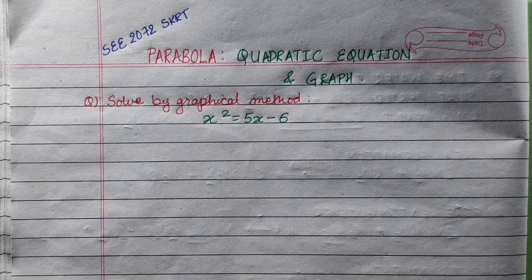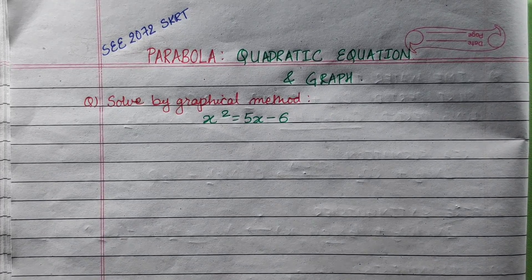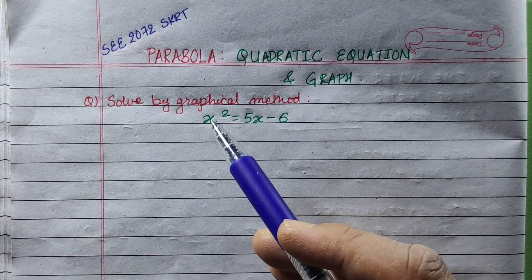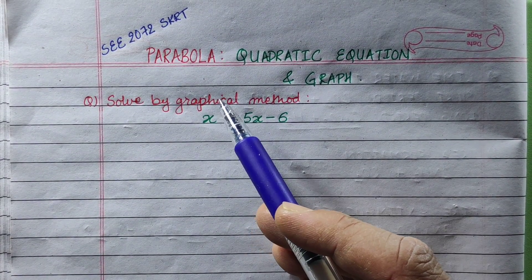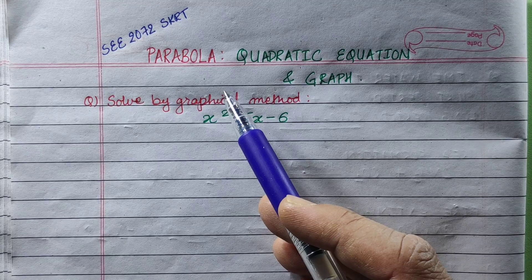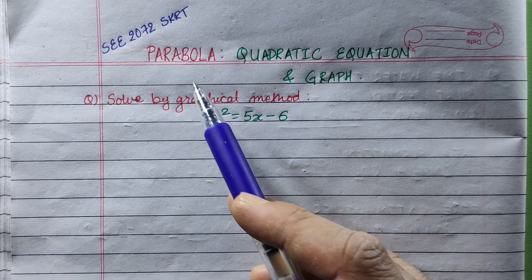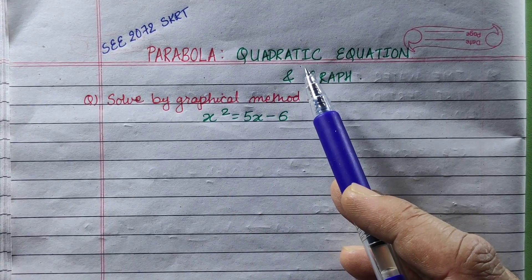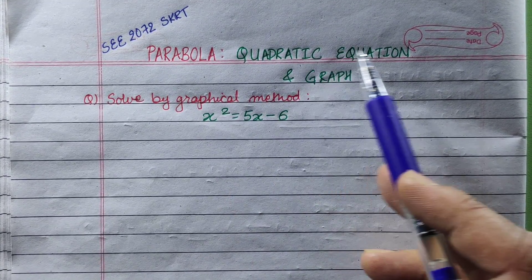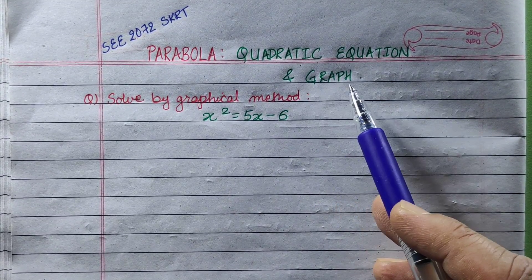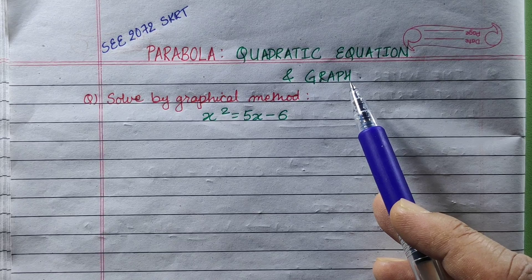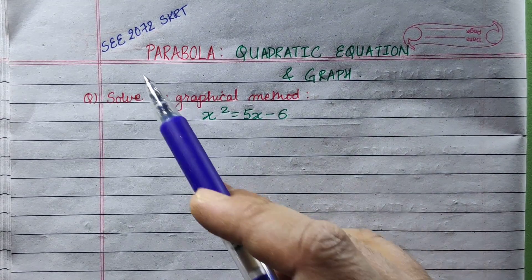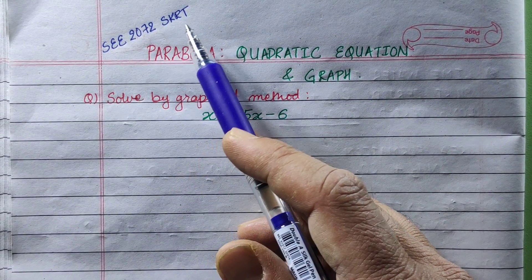Hi everyone. Today I am going to learn the important part of the option math — parabola, which is quadratic equation and graph. This question I am going to learn from AC-2072.